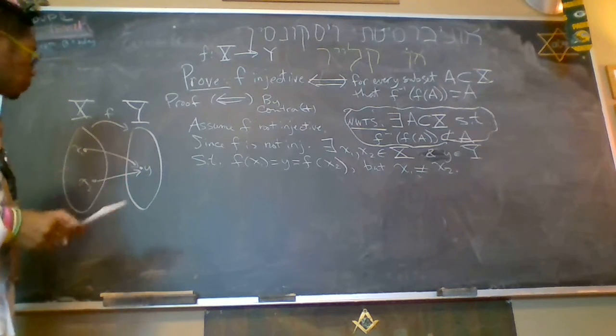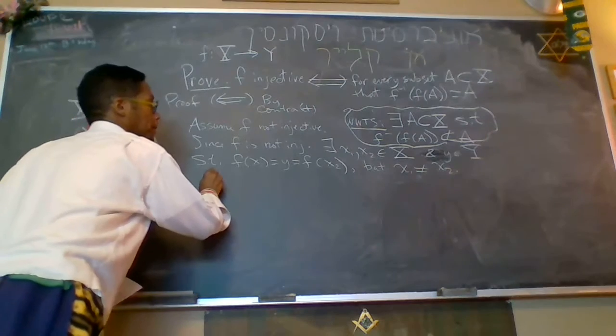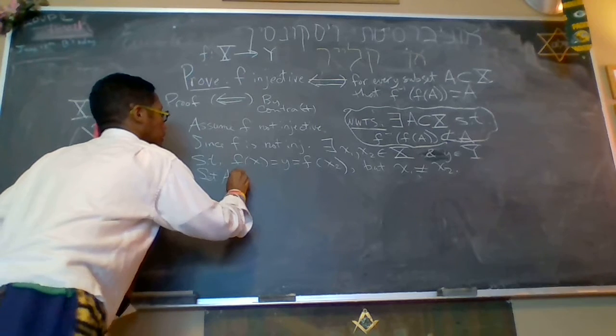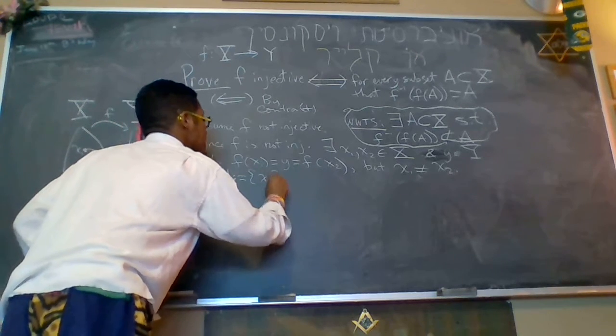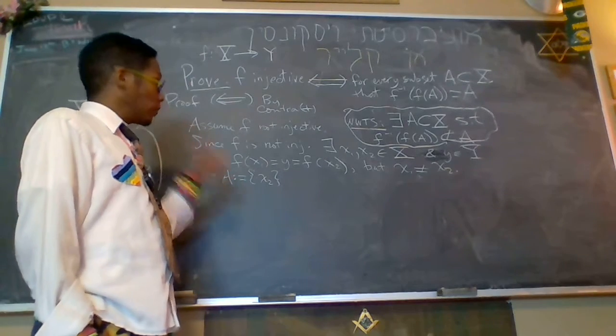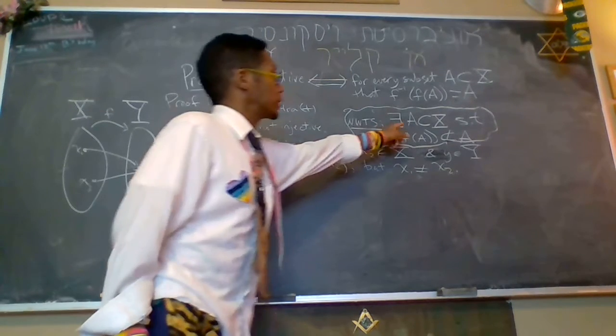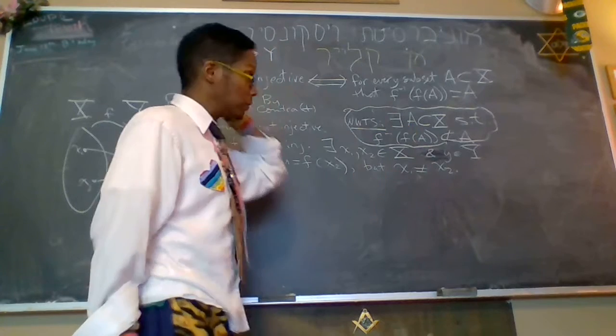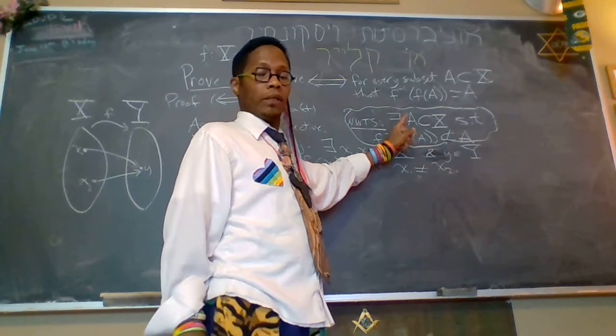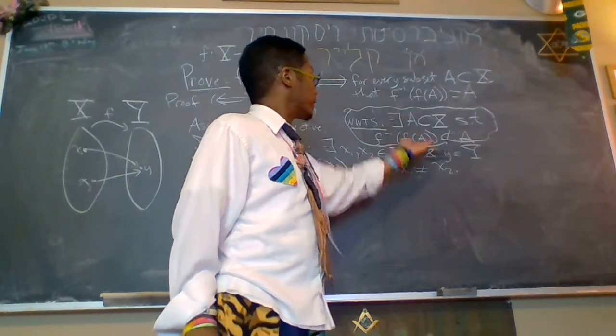Okay. So let's set a to be equal to the set containing only x2. So I'm going to claim that this is the a that will work. Remember, to show, to prove an existence, we just need to exhibit at least one set a that satisfies this property.